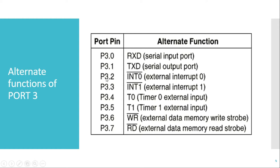P3.2 and P3.3 are the external interrupt pins. As we know, an interrupt is used to interrupt the CPU — it stops the main program and executes the interrupt service routine. Whenever any external device requires servicing from the CPU, it will interrupt the CPU, and that interrupt signal can be given either to P3.2 or to P3.3. Both these pins can be used as external interrupt pins.